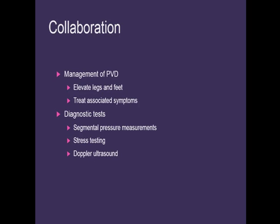Our main treatment goals are to relieve symptoms, promote adequate circulation to tissues, and try to heal and prevent tissue damage. Unna boots can be used to treat weeping stasis ulcers. Segmental pressure measurements check pressures within the upper and lower extremities — in peripheral vascular disease we check the lower, and we expect pressures to be lower in the legs than in the arms.